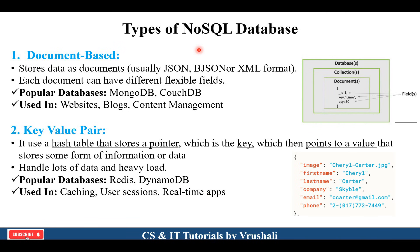The first type is called document-based NoSQL. You are all familiar with content management — different websites and blogs. All this information is stored in document format. They have different flexible fields. They use different web development programming languages — JSON, binary JSON, or XML format files. This is called document-based NoSQL. In the market, MongoDB and CouchDB are the popular databases that support document-based NoSQL.